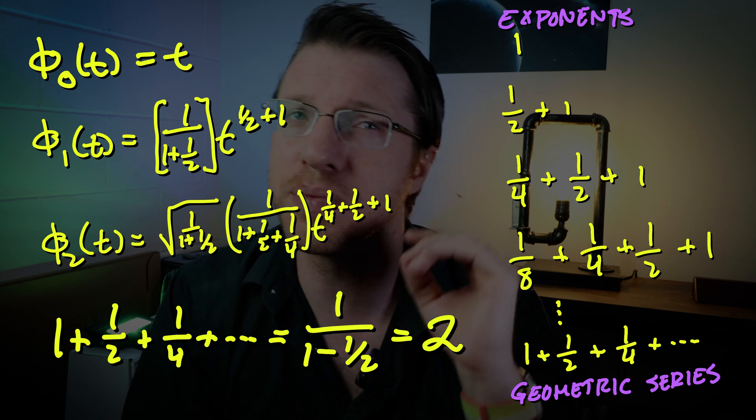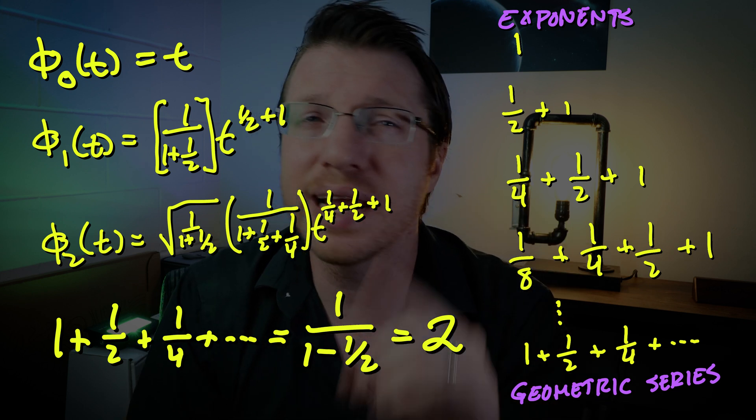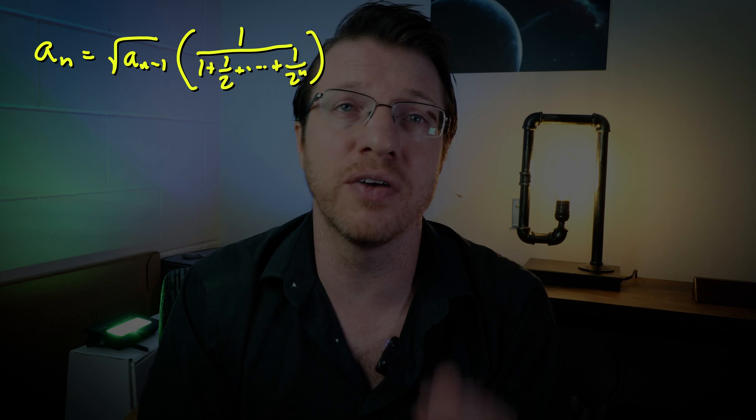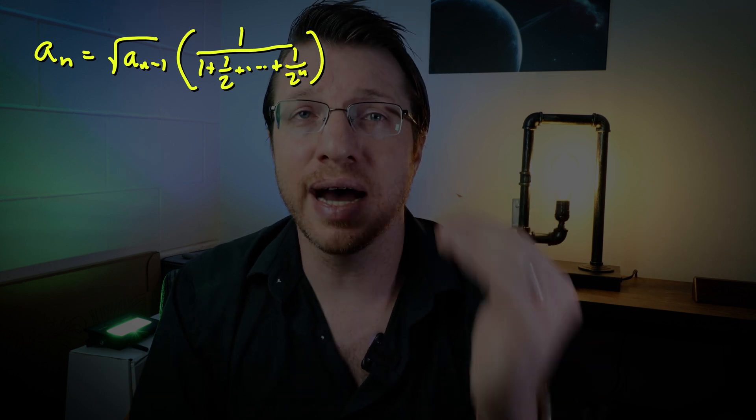Hopefully the coefficient should be converging to 1 quarter as well and let's see if that happens. The coefficient gets square rooted each time and then divided by a partial sum of the geometric series.